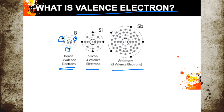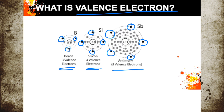Silicon, on the other hand, will have one, two, three, four valence electrons, while antimony will have one, two, three, four, five valence electrons. So when we say valence electrons, these are the electrons in the outer shell that are ready to bond with other atoms.